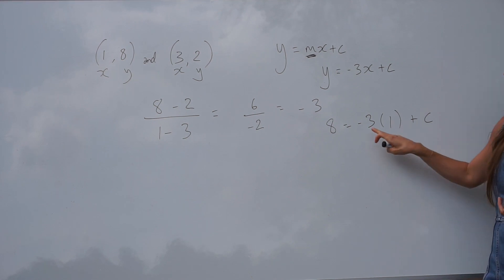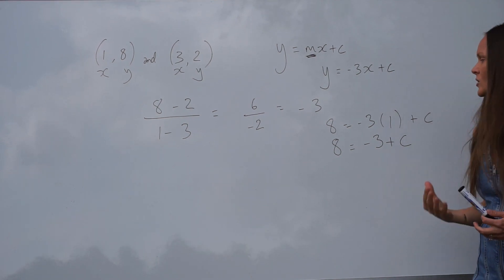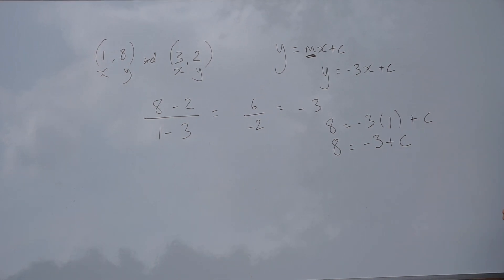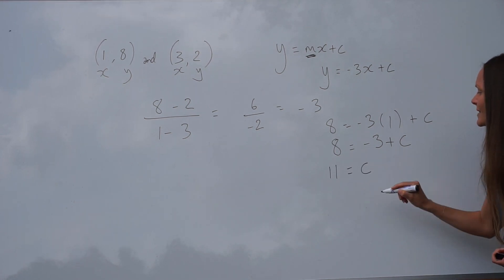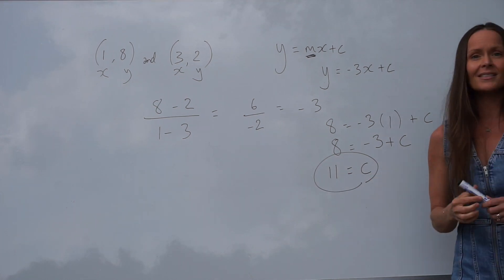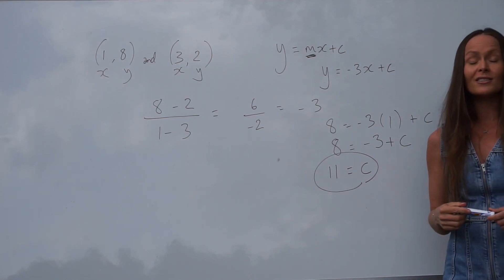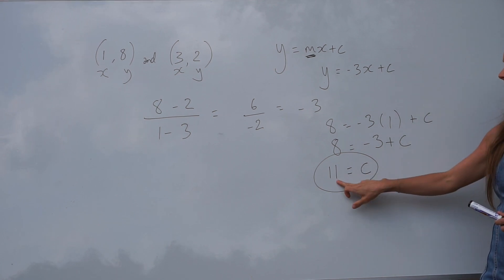Let's simplify this. Negative 3 multiplied by 1 is just negative 3. So the equation simplifies to 8 equals negative 3 plus c. We're just solving this equation to work out the value of c. If I move the negative 3 over to the left-hand side of the equation, it changes to a positive. So 8 plus 3 is 11. So c is 11. The y-intercept of this straight line is 11. The straight line crosses the y-axis at positive 11.